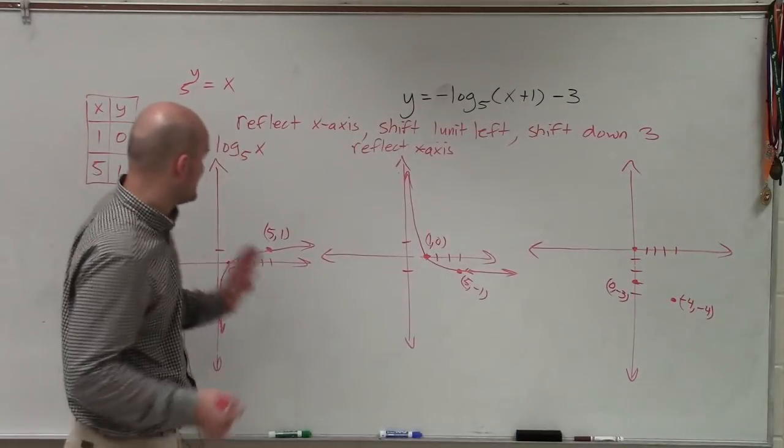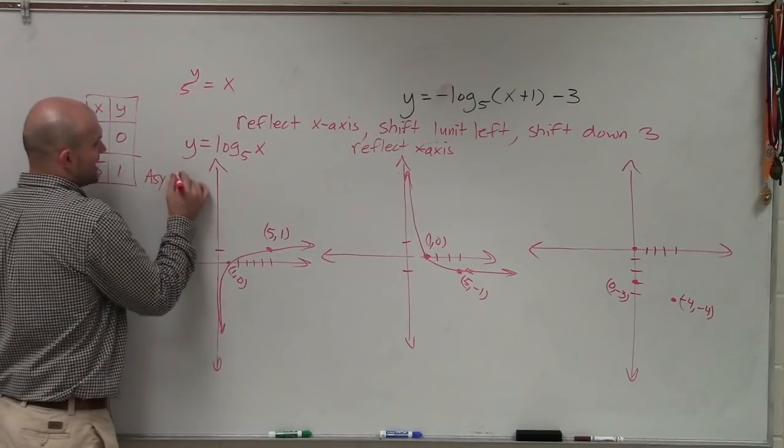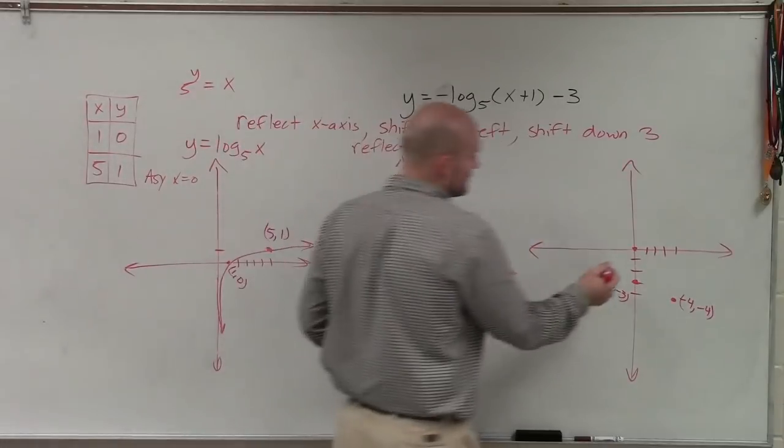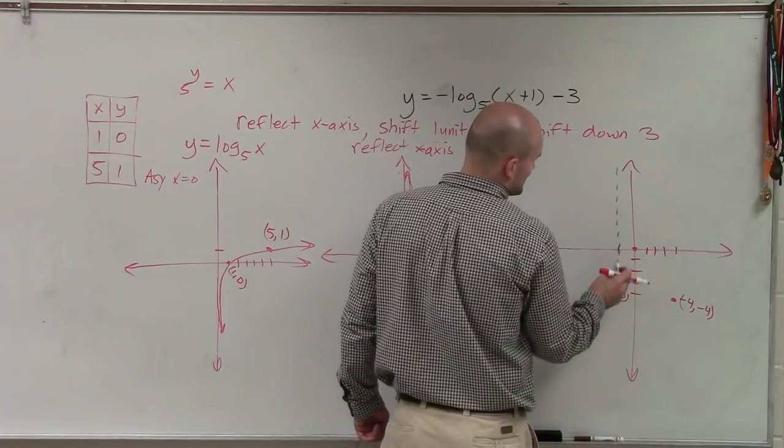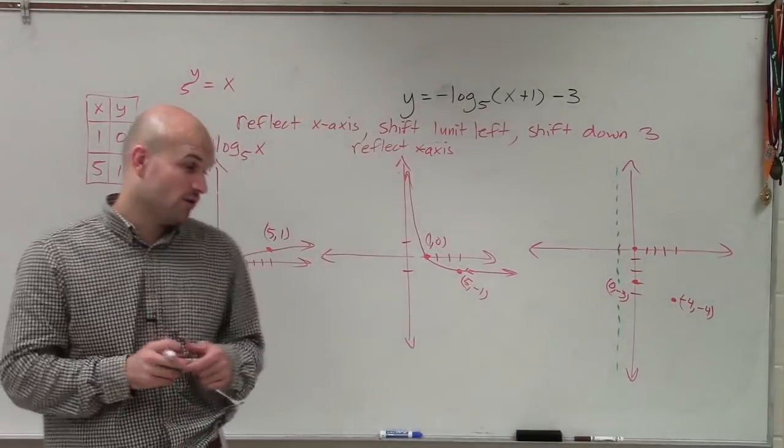All right, then the next important thing is I need to look at this asymptote. Remember, we have an asymptote here at x equals 0. So if I shift my graph 1 unit to the left, I now have a new asymptote at negative 1.